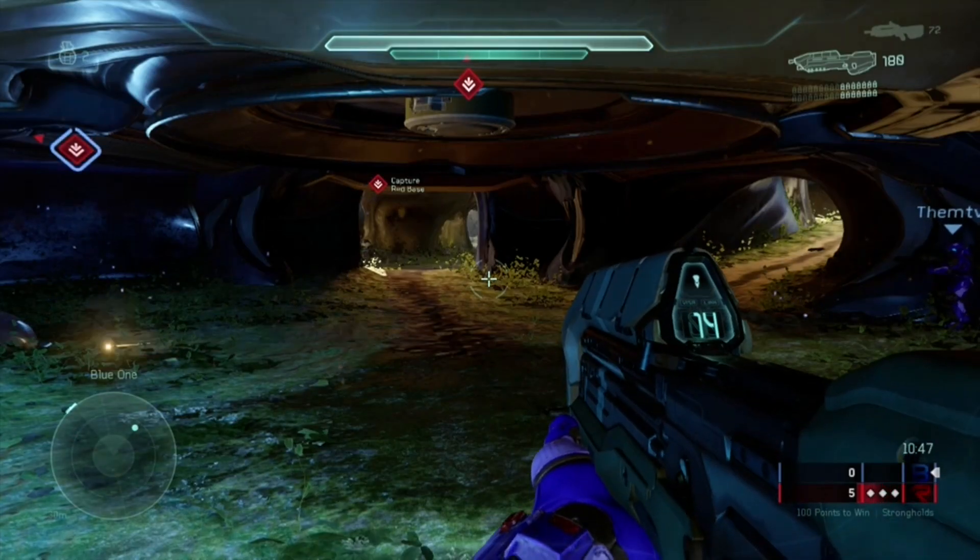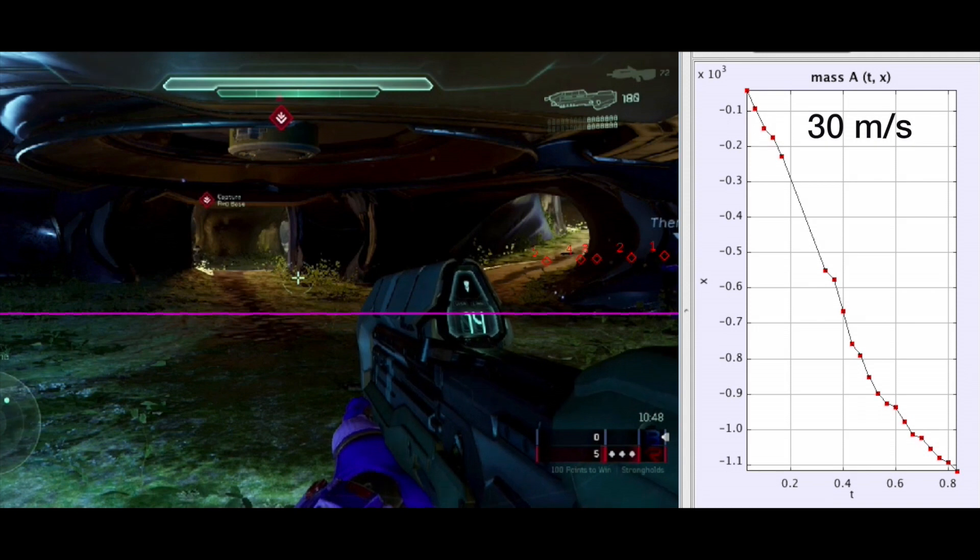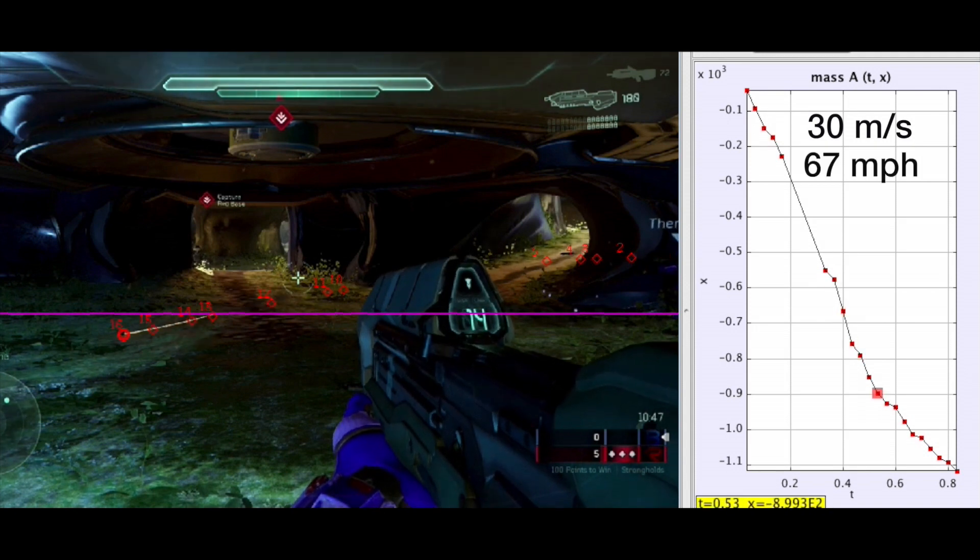I was also able to analyze the speed at which a grenade is thrown, which is about 30 meters per second or around 67 miles per hour.